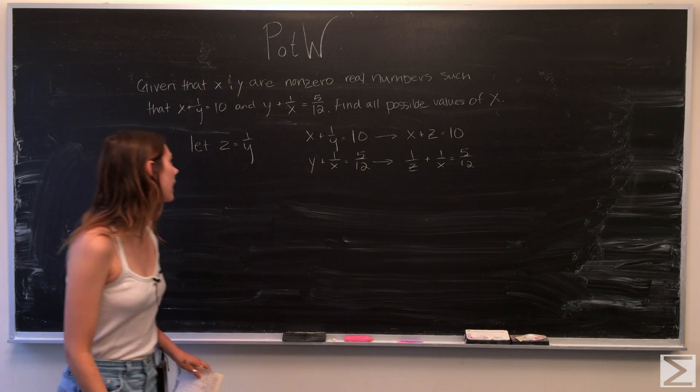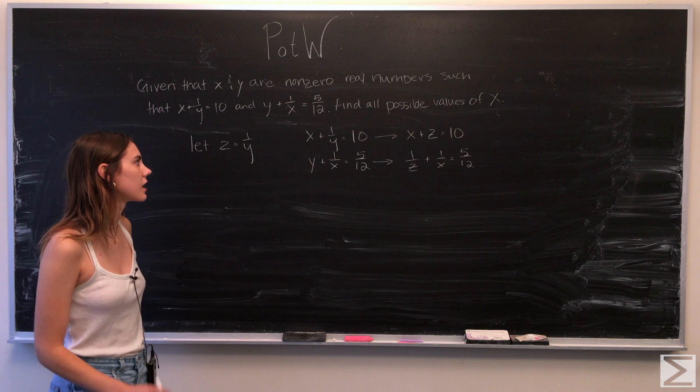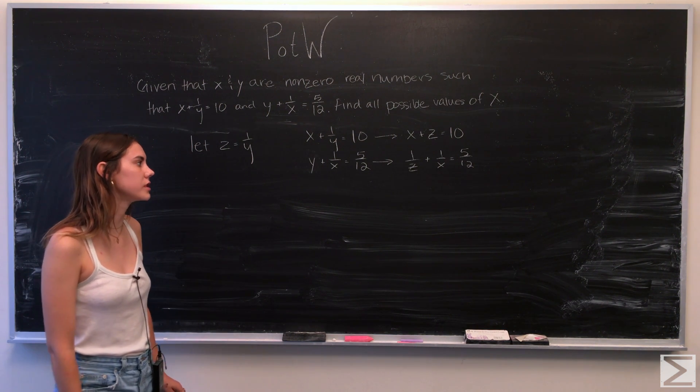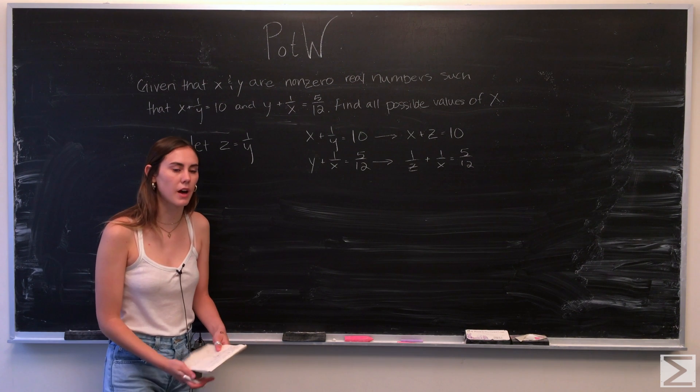So using that z is equal to 1 over y, we can now change the equations to x plus z is equal to 10, and 1 over z plus 1 over x is equal to 5 over 12.